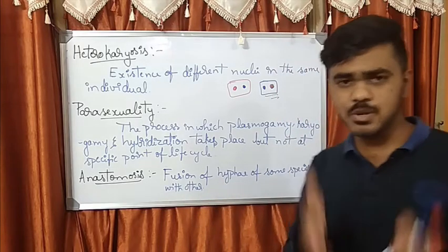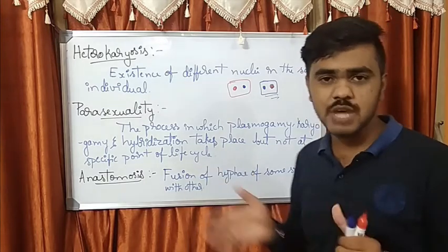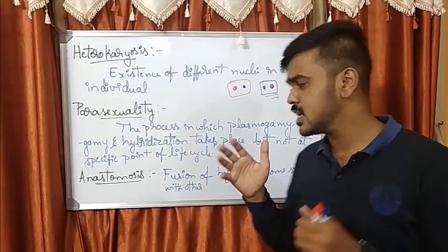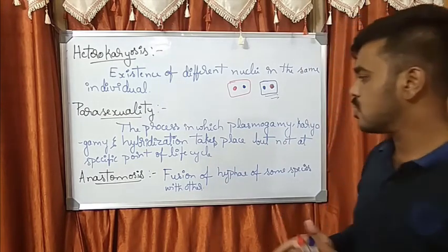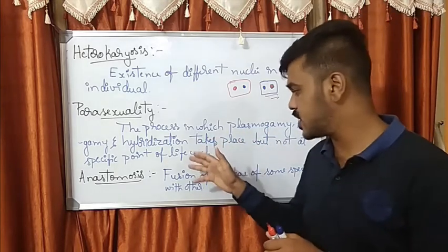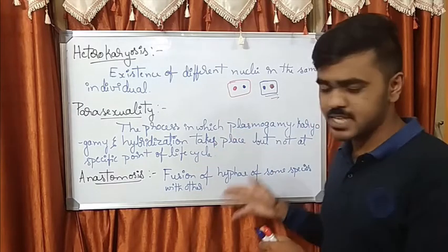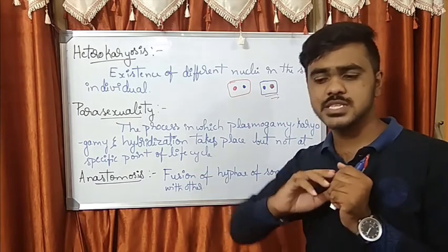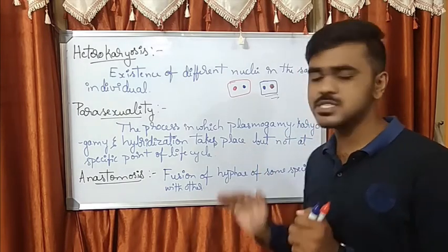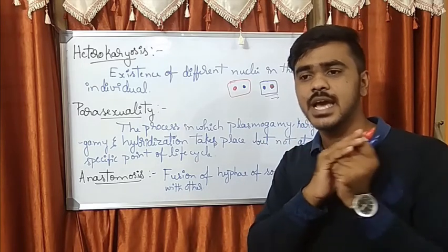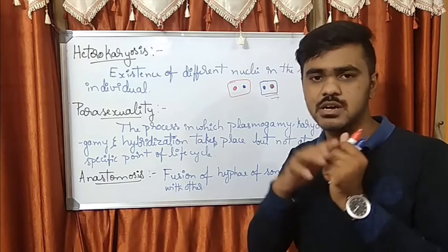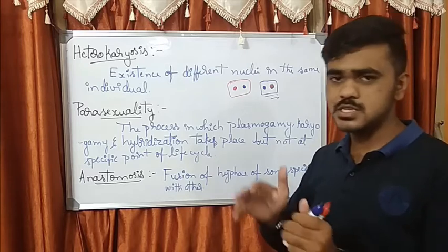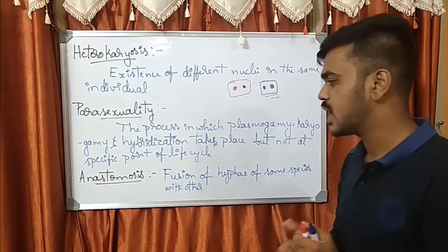Parasexuality - it is a process very common in Deuteromycetes and some Ascomycetes also. They do not have a sexual life cycle. They make use of this parasexuality to maintain their generation and entire life cycle as a sexual life. The process in which plasmogamy, karyogamy, and hybridization takes place but not at a specific point of time of the life cycle. Here everything takes place but not at the right point of time. In this parasexuality, there exists a condition which is similar to sexual life cycle, but they all happen in an asexual condition - that is the Deuteromycetes. Deuteromycetes have only asexual stages; that is why it is called fungi imperfecti. This parasexuality helps the Deuteromycetes to maintain their generations.